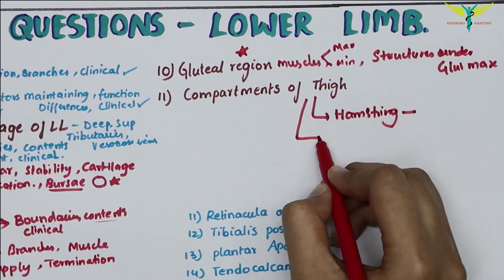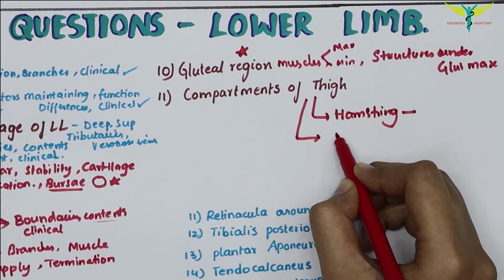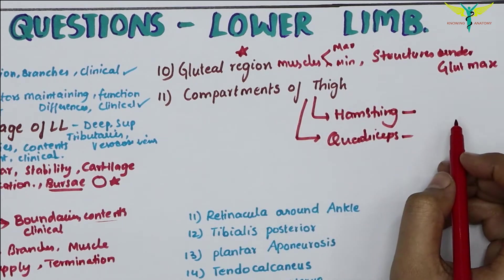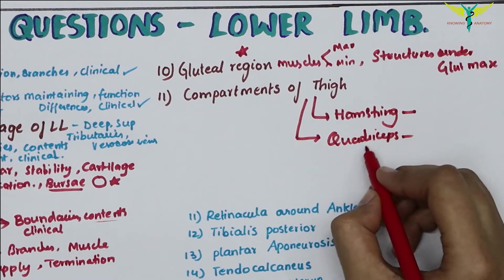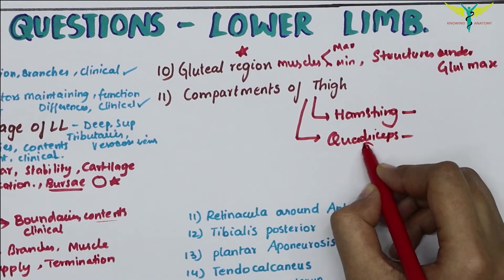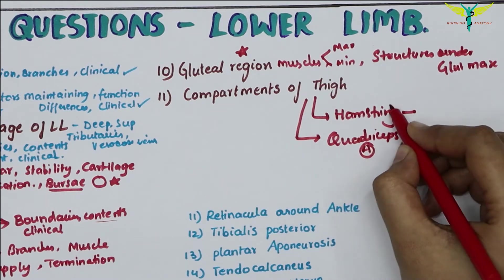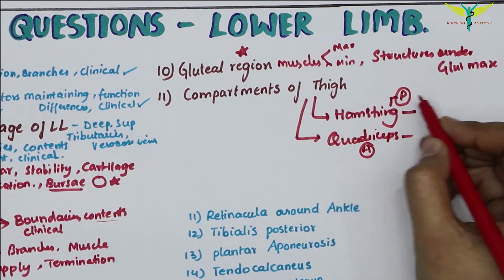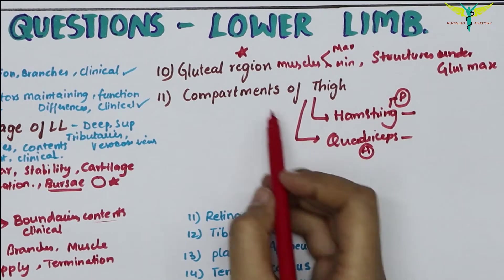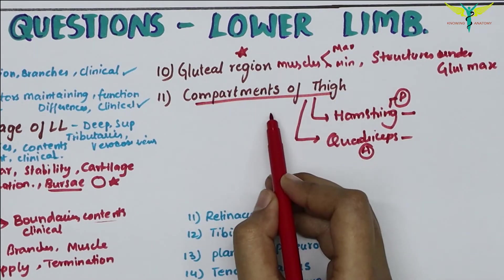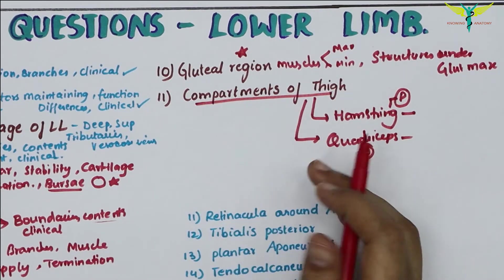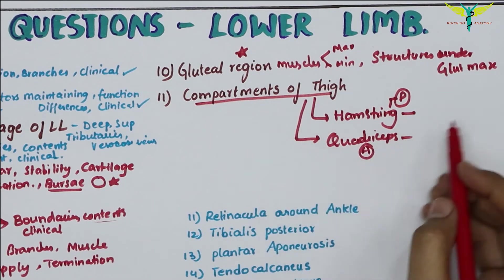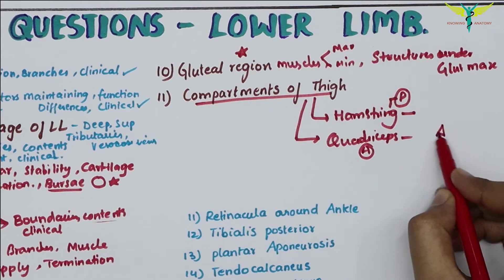They may ask the hamstring group of muscles — the posterior compartment — and the quadriceps group, which is the anterior compartment. The compartments of the thigh with nerve supply, muscles, and movements involved is an important essay question.